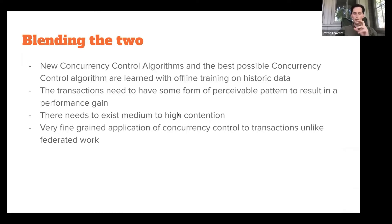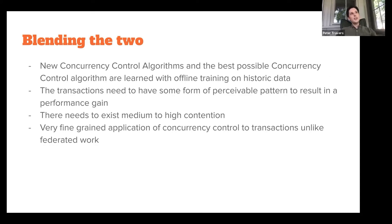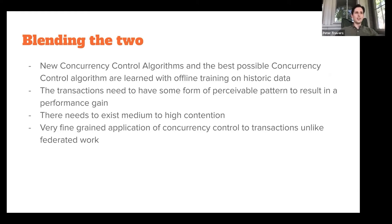For this to work, we really need to have some kind of perceivable pattern within our transactions. You can't have a functionally random set of transactions and learn anything valuable. The authors point out that in a largely random workload, this database will perform worse than one that purely uses optimistic concurrency control. They're only really validating this against databases that have some level of contention. If you have no contention, optimistic concurrency control would dominate, or even no concurrency control would obviously win.